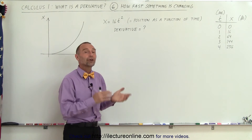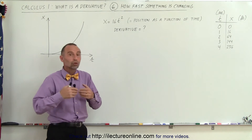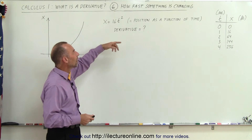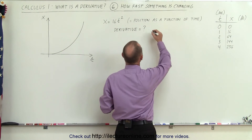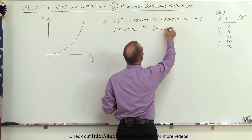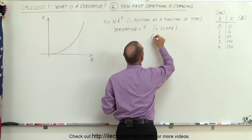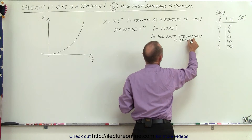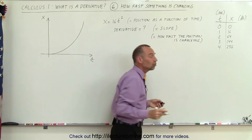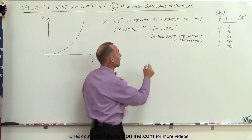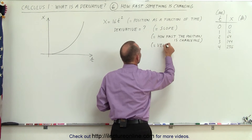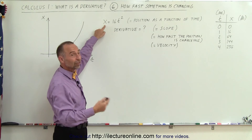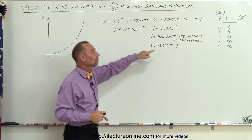What does the derivative of this particular function mean? The derivative tells you the slope of the function — it tells you how fast the function is changing. In this case, it tells you how fast the position is changing. So the derivative can mean the slope of the function, or how fast the position is changing. And when you think about it, how fast the position is changing is really the velocity of the object. If x is a function representing position, then the derivative of that represents the velocity.